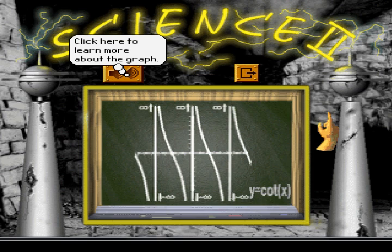This is a graph of the equation y equals cotangent x. It looks a lot like the graph of y equals tangent x but there are differences. Can you spot them?